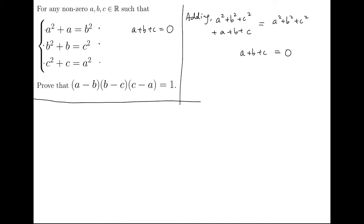c as subjects of these three equations, and we will have a equals b squared minus a squared, b equals c squared minus b squared, and c equals a squared minus c squared.